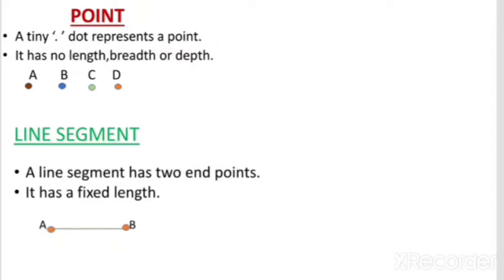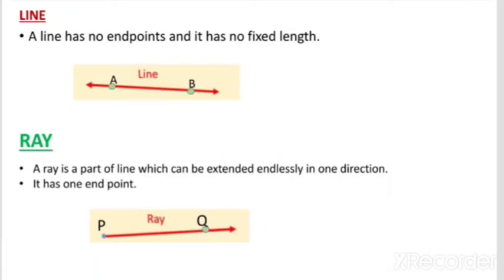What is a line? A line has no end point and no fixed length. We can extend the line endlessly in both directions. Here, AB is a line, so from point A and point B we can extend the line in both directions. It has no end point.